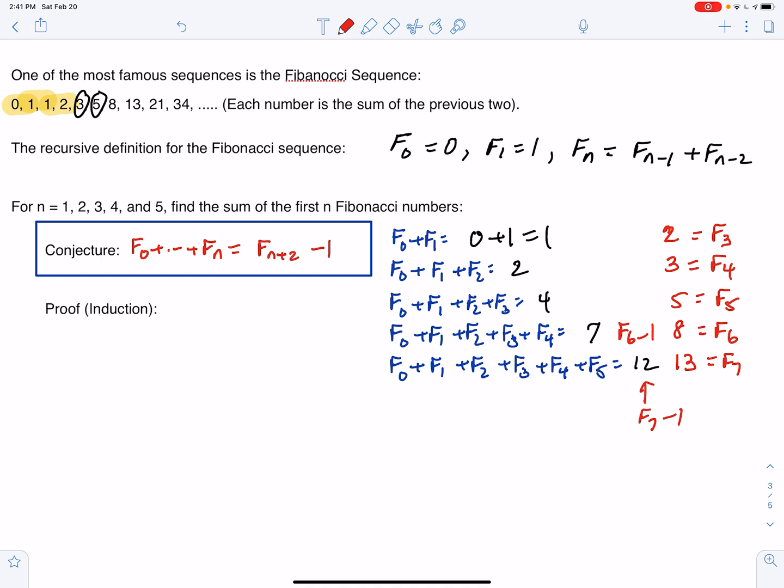And how are we going to prove that? What better method to prove anything for integers than to use induction? So first thing to look at is n equals 1 as the base case. We know that F0 plus F1 is equal to 1. We computed that already. And we know that Fn plus 2 is 3 minus 1 is 2 minus 1, which is 1.